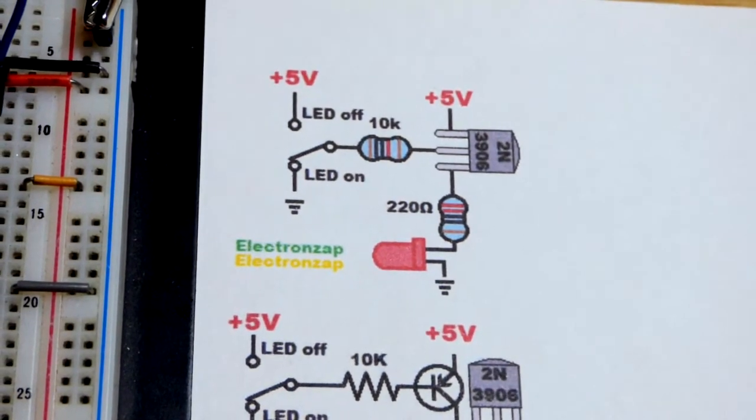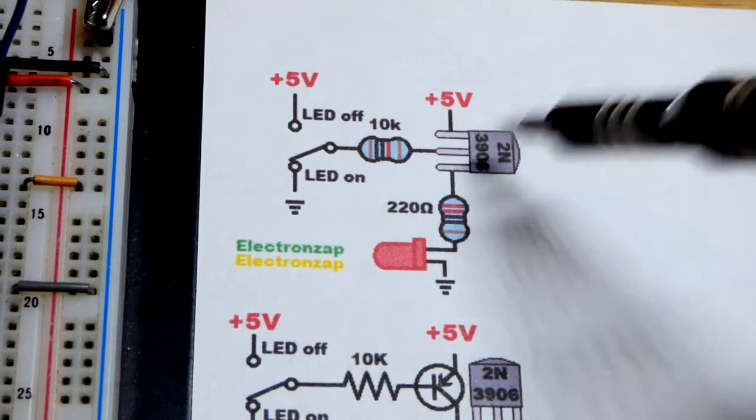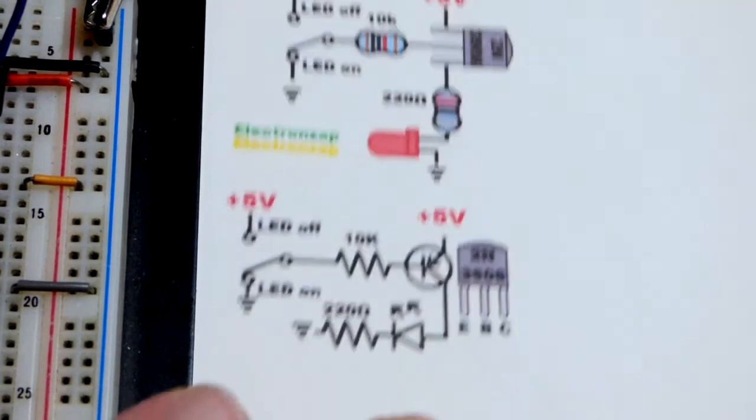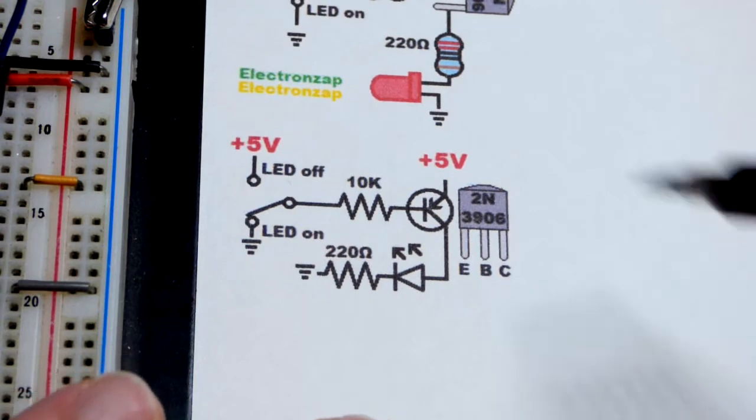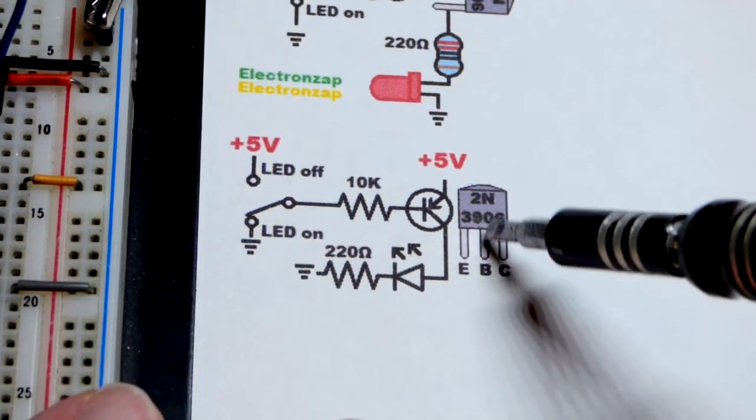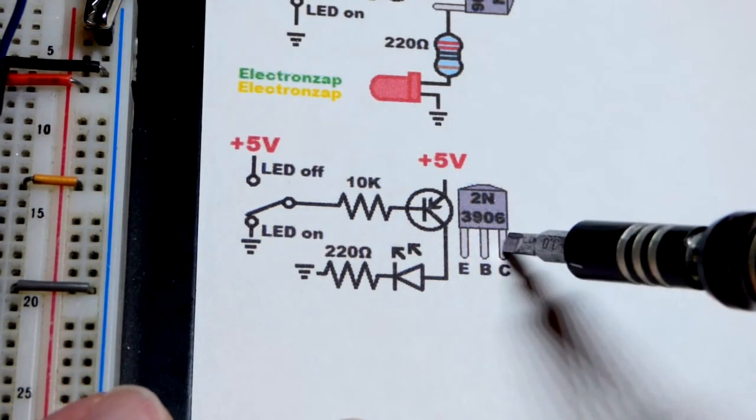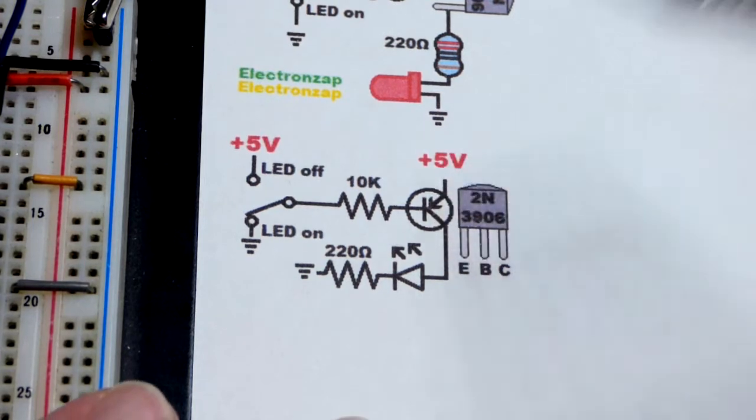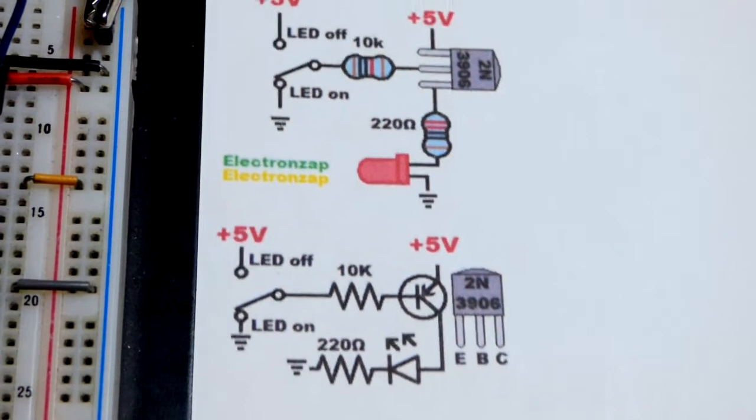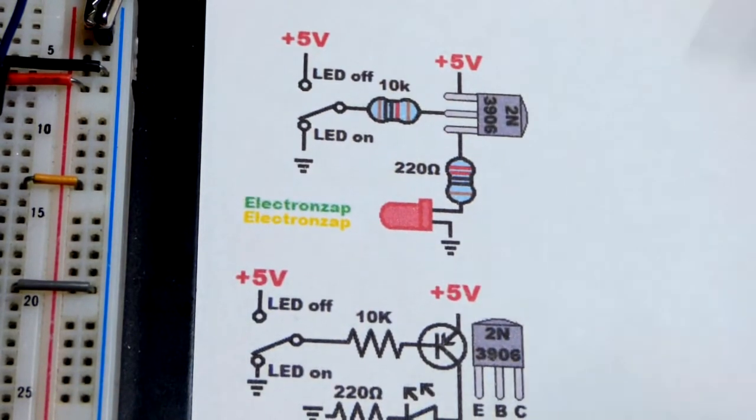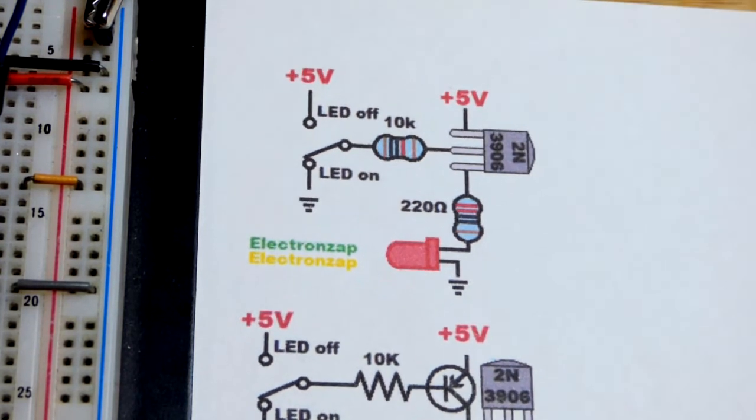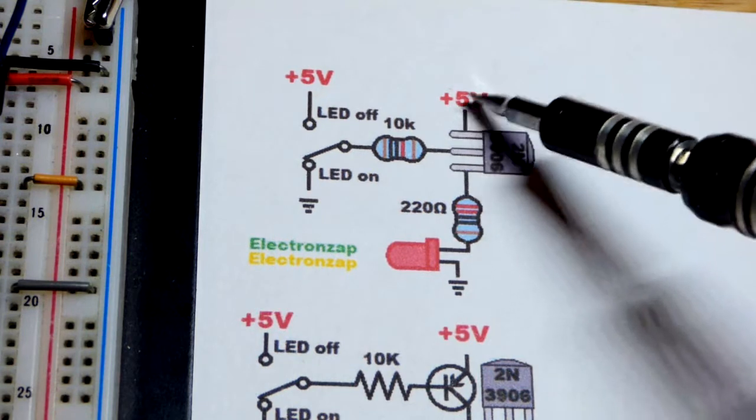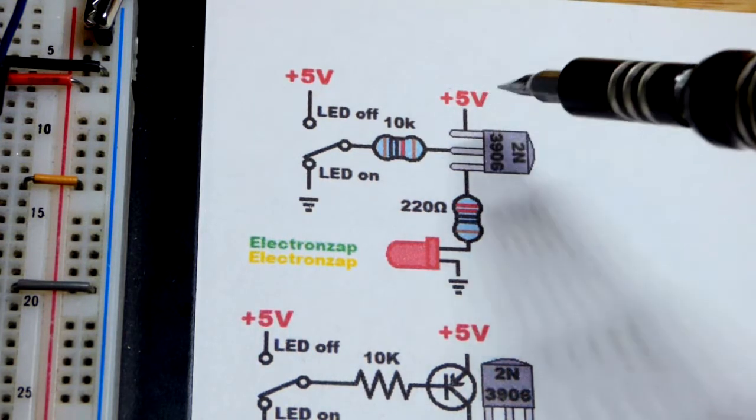So when you look at the flat side of the 2N3906, the left pin is the emitter, the middle pin is the base, and right pin is the collector. We want the emitter to the positive supply. So you can see that there. We just swivel this around like that, and then the emitter will be on top. That's what we have on the board. So that goes to the positive supply there.